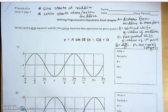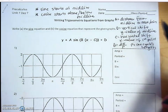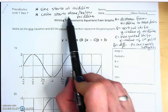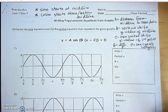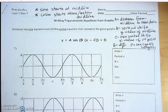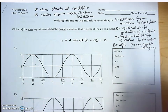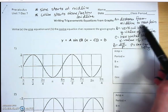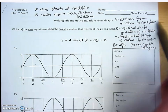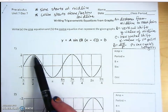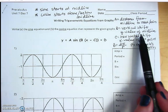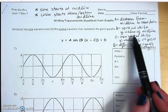I have some notes at the beginning of the video I'll be referring to, so pause and write these down if you'd like. These are tips for reading the graphs. Our goal is to read the graph and write an equation for it. The a value is our amplitude — that's the distance from the midline to a maximum point or a minimum point. We can see the midline and the max and min points, so we just calculate that distance.